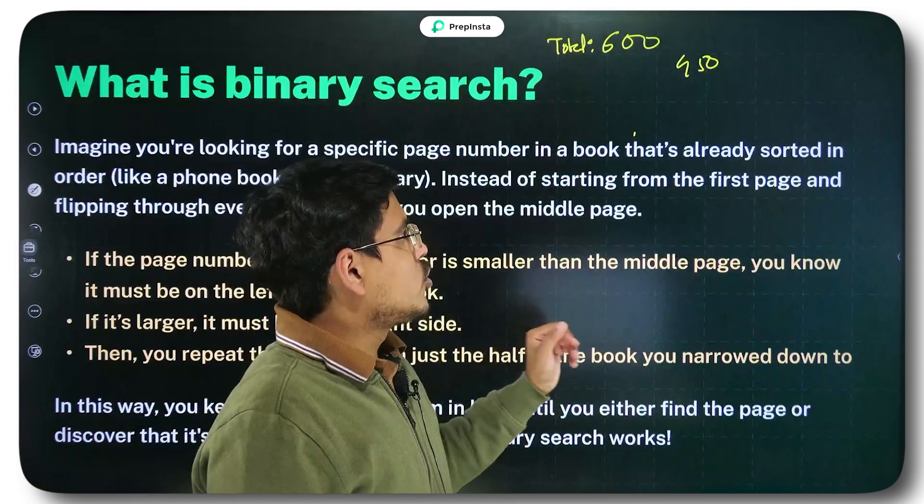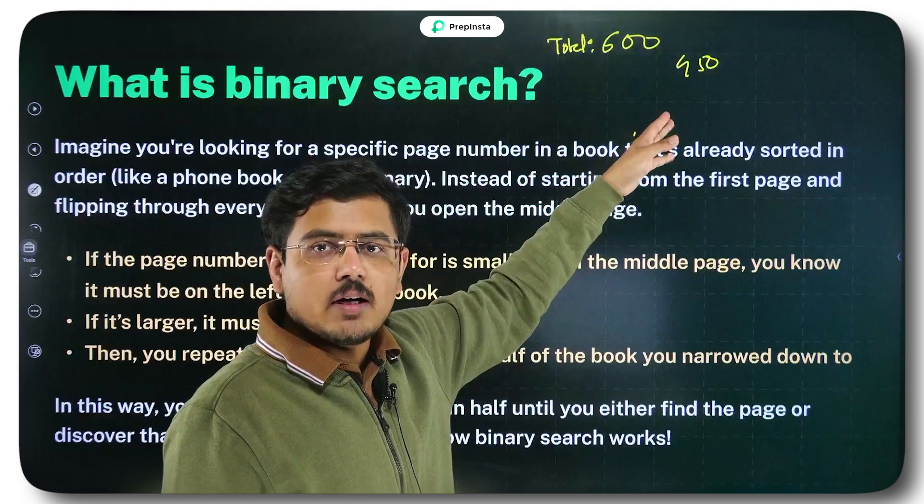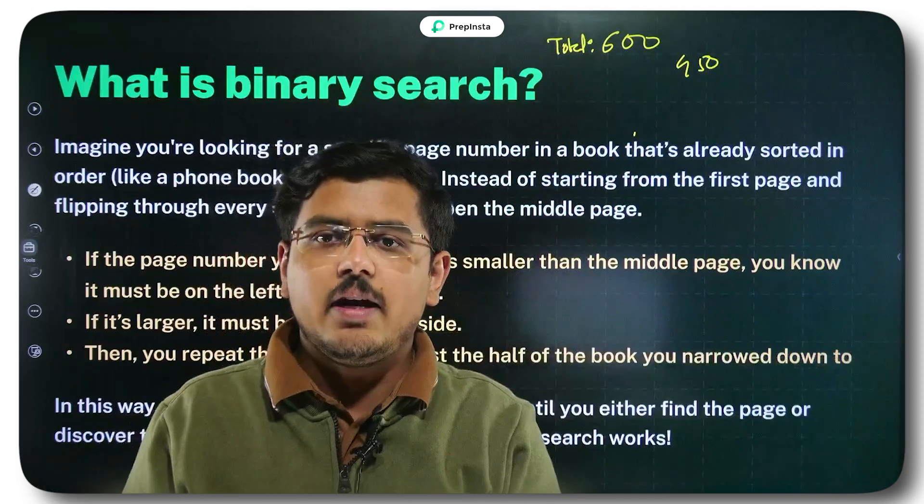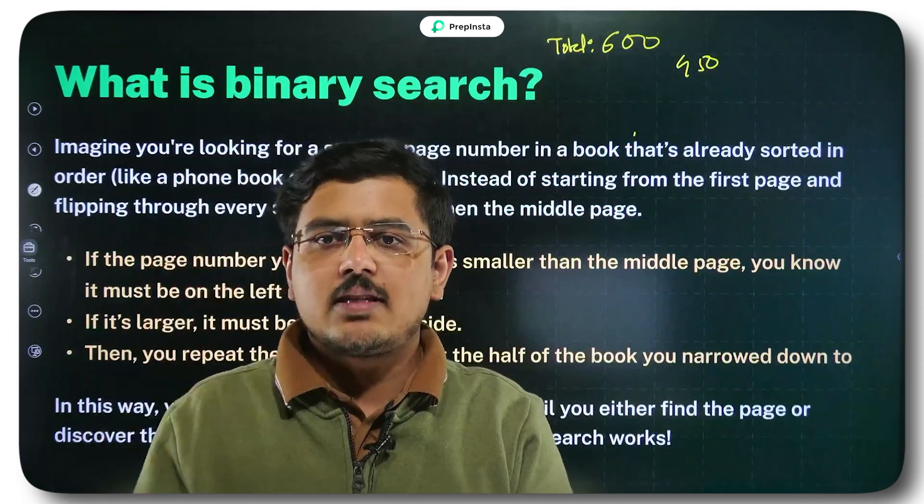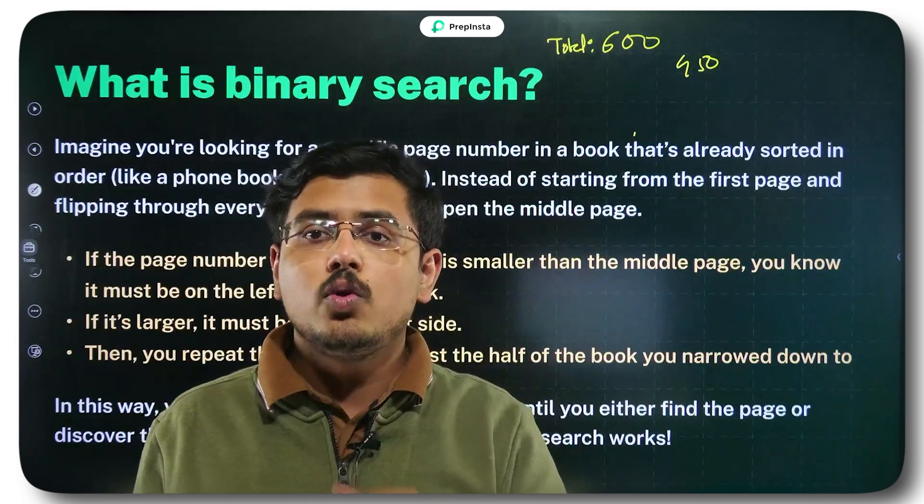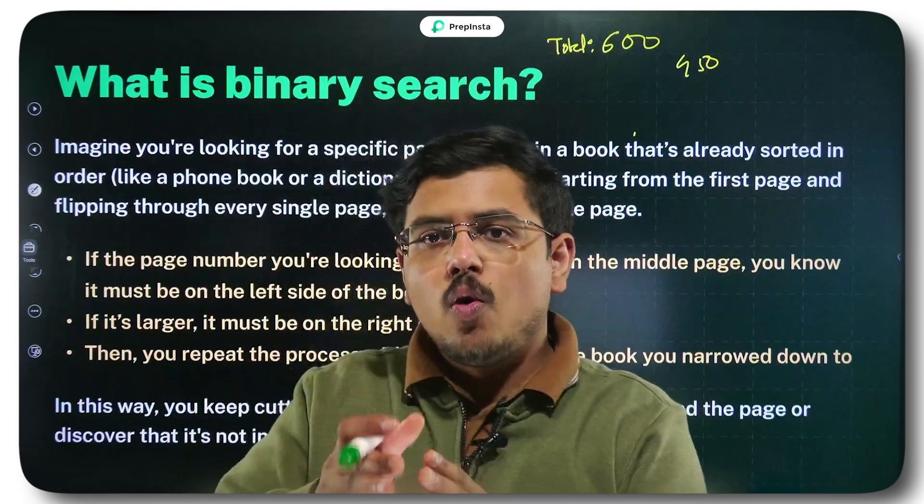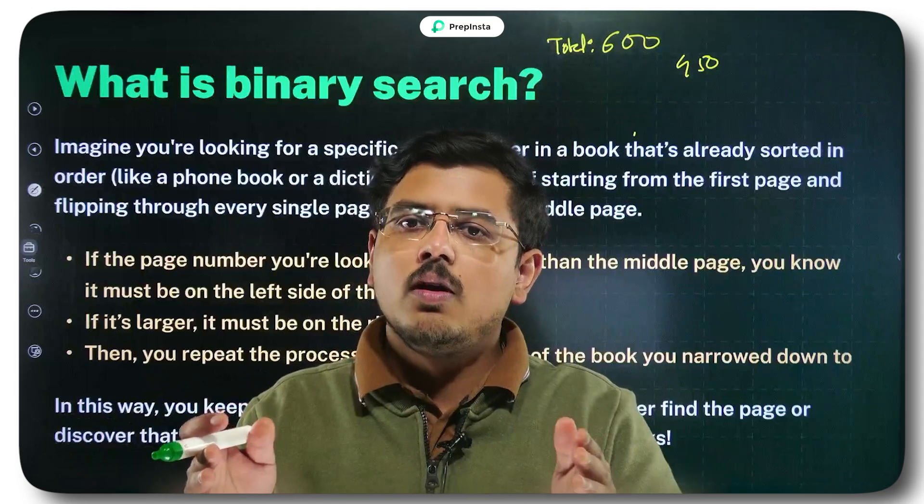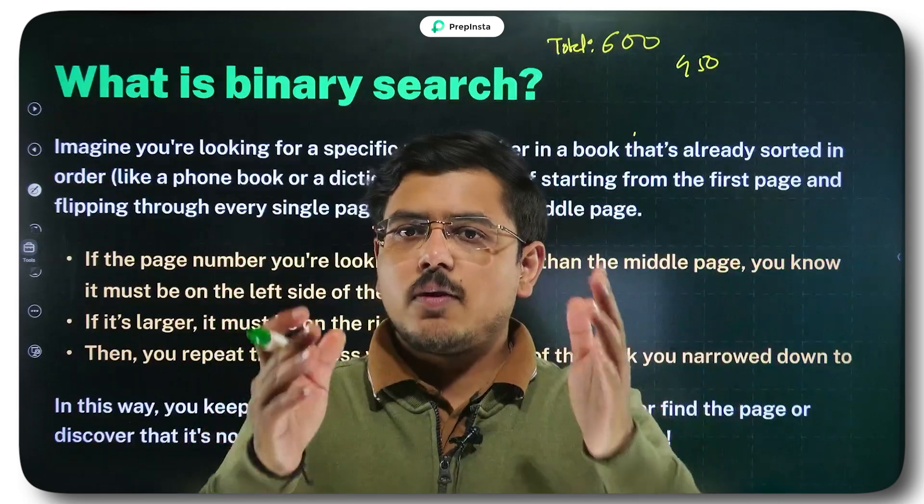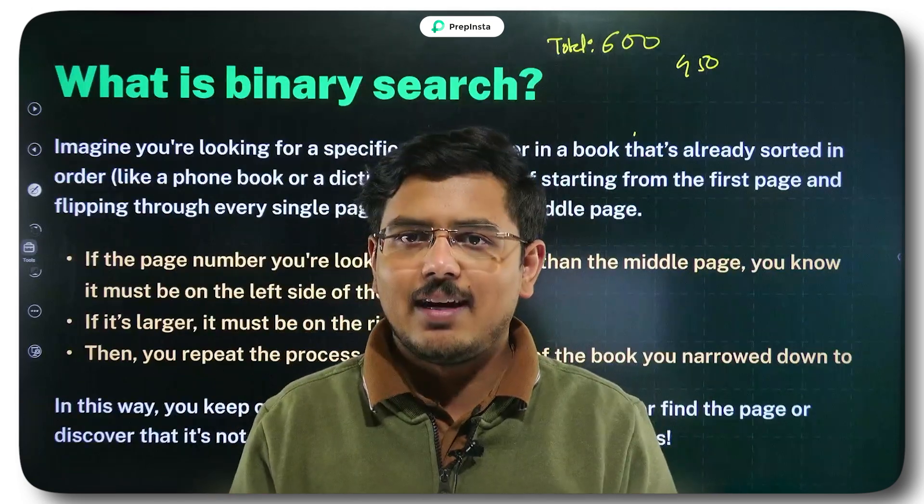So if 320 was the middle page then your value is greater than 320 that you are trying to find the page number. So what you will do is you ignore the portion before 320 and try finding out from 320 to 600 page. Then you again open the middle portion and this time you get 500 as your middle page, 450 is lesser than 500. So what you do this time is you ignore the portion after 500 and you search before 500. From that to 500 or 550 whatever you get as the middle number this time, you search in between that.